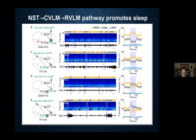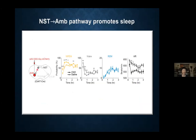For the other pathway — the nucleus ambiguus — because it's a very thin and long structure making it difficult to use a single optic fiber, we focused on chemogenetic activation, injecting virus at multiple anterior-posterior locations. Chemogenetic activation of these cholinergic cells caused an increase in non-REM sleep and decrease in wakefulness, together with a decrease in heart rate.